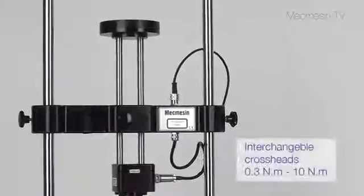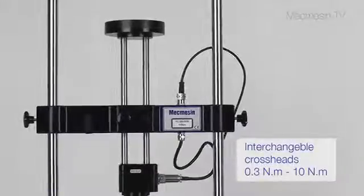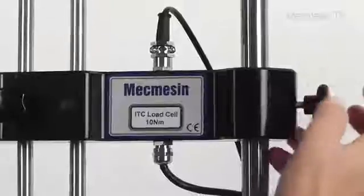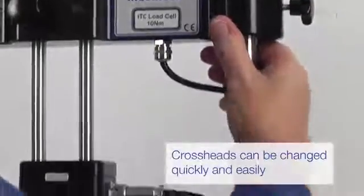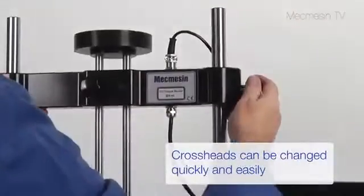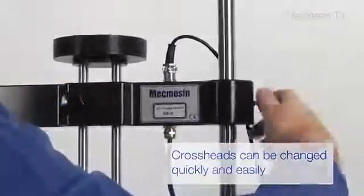Five different torque sensors are available for low to mid-range torque measurement. The rigid twin column test frame accommodates the interchangeable precision torque sensors. Swapping the crosshead takes just a few seconds and no special tools are needed.